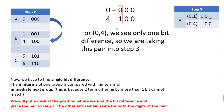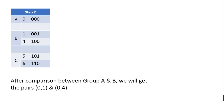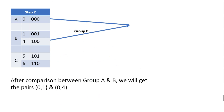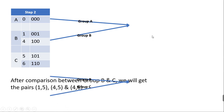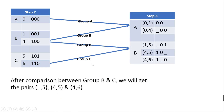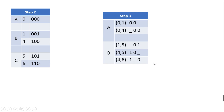Continuing the comparisons, from groups A and B I get pairs 0,1 and 0,4. From groups B and C I get pairs 1,5 and 4,5 and 4,6, and so on. This completes Step 3.